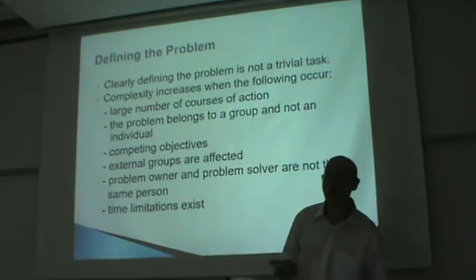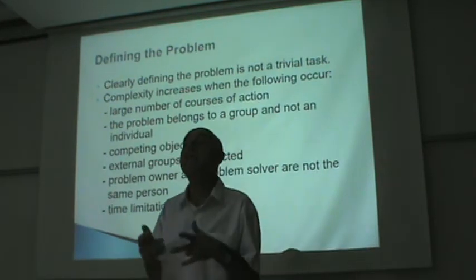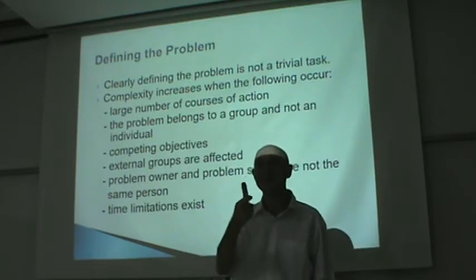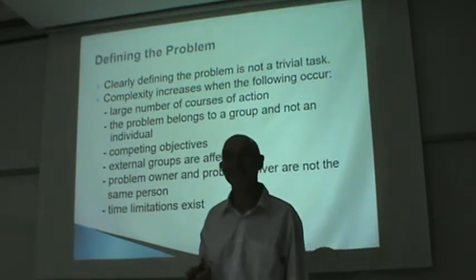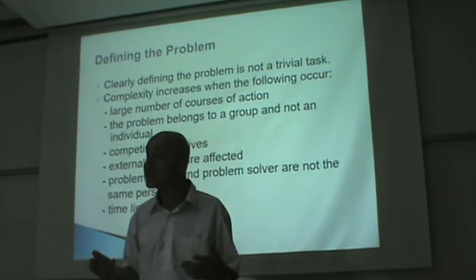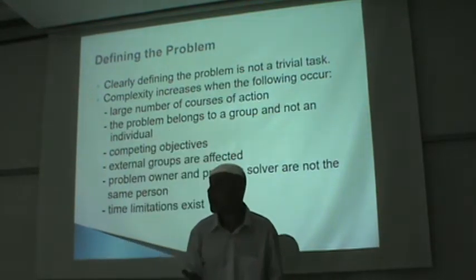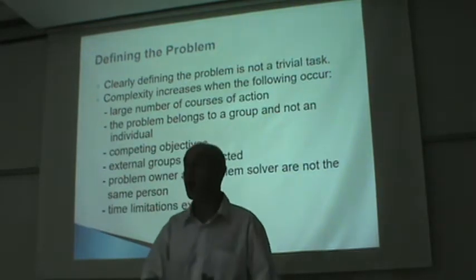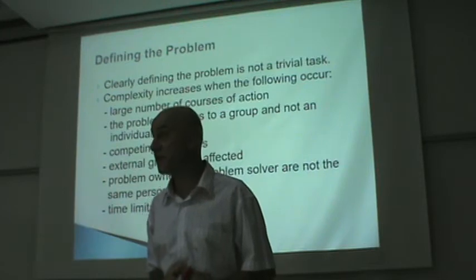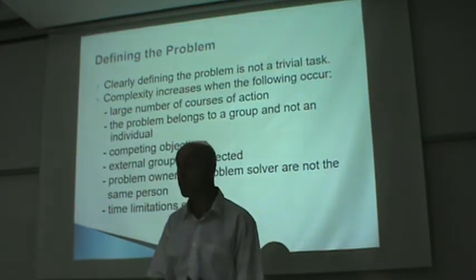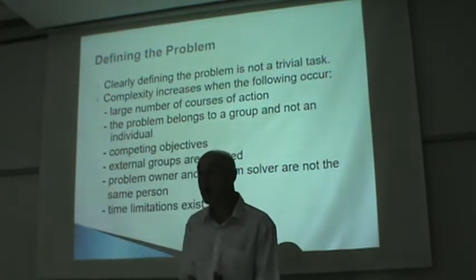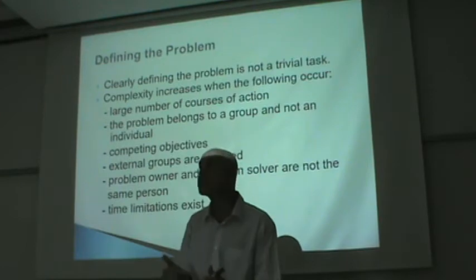Once you recognize the problem, the second step is to define the problem. Defining the problem is actually a tricky step. For example, it's very difficult to define what a slim person is — what does slim mean? How big does the belly have to be? Some people will be borderline. Where is the border? Are you slim or not slim?